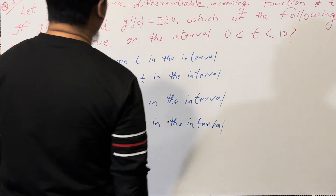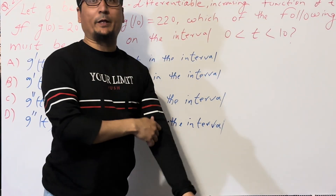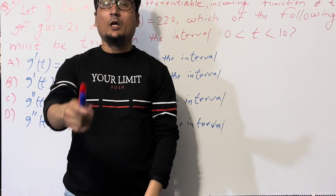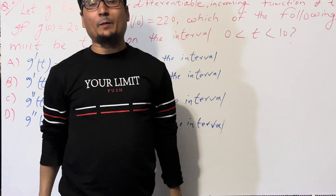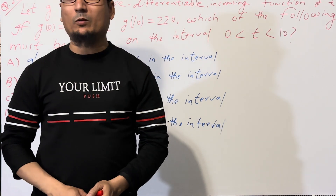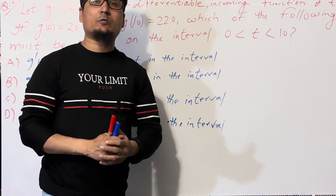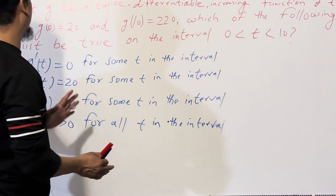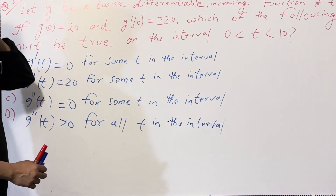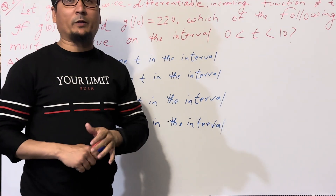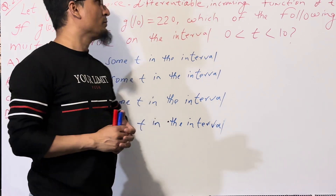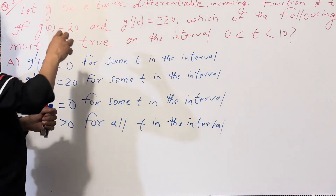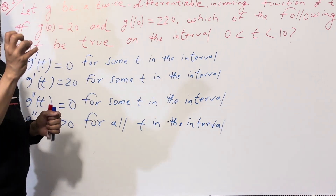Assalamu alaikum, bismillahirrahmanirrahim - in the name of Allah the most beneficial. As you know, I'm solving the past paper of 2018 AP Calculus. I already solved questions number one to nineteen, and now we are going to solve question number twenty. It is a problem-solving question that will give you proper information, so I'm going to focus on the keywords.